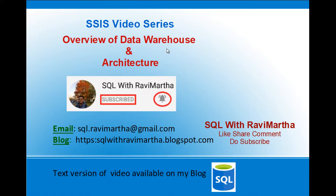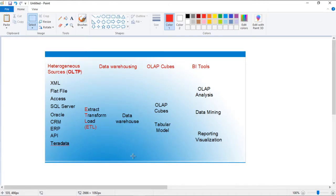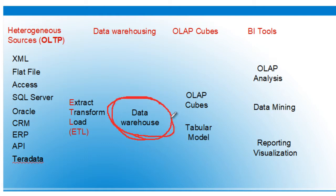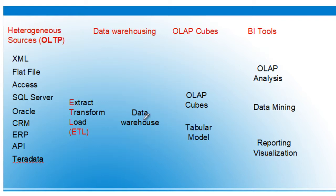In today's session, we'll see what is a data warehouse and what is its architecture. Before jumping onto the slide, let's take an example of a company. What is a data warehouse? It's a database which holds data from the start of the company till date. It holds the entire history data, and whenever we need it, we can access the database to get that data. So a data warehouse is a large collection of business data that helps the organization to make decisions.